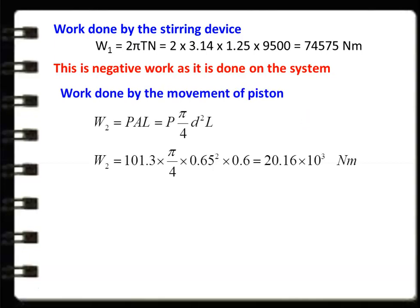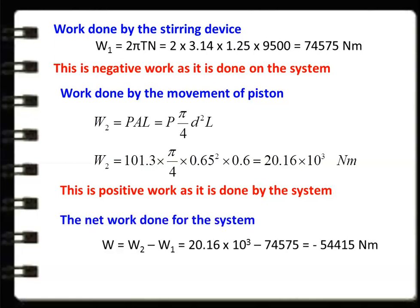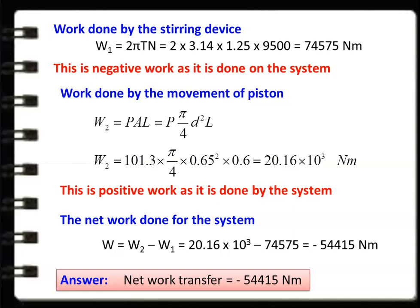Work done by the movement of the piston: W2 = P × A × L, where P × A is the force acting on the piston and L is the length moved. So A = π/4 × D². Therefore: 101.3 × (π/4) × 0.65² × 0.6 = 20,160 Nm. This is positive work as the piston is doing work — it is work output from the piston. Net work done = W2 − W1 = 20,160 − 74,575 = −54,415 Nm. The net work done is negative because the stirring work is more than the work done by the piston.